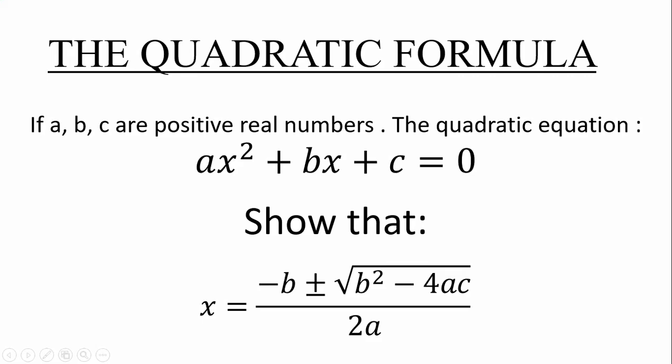This video is all about deriving the quadratic formula. Now if a, b, and c are positive real numbers, the quadratic equation ax² plus bx plus c is equal to zero. We need to show that x is equal to minus b plus the square root of b squared minus 4ac, all divided by 2a.